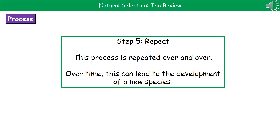If that process of natural selection is repeated over and over again over a long period of time, then eventually it can result in the development of a new species. That's all evolution is — natural selection occurring over and over again until we've got such a different organism to the one we started with that it's classed as a brand new species.